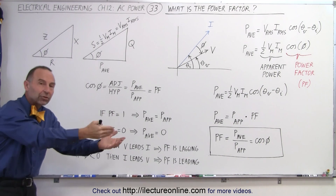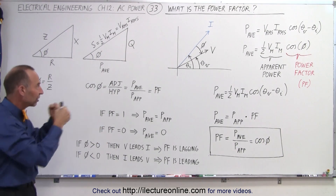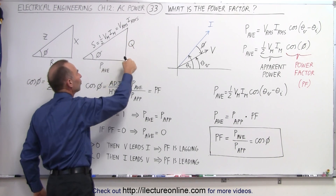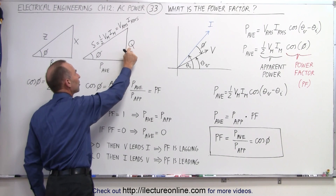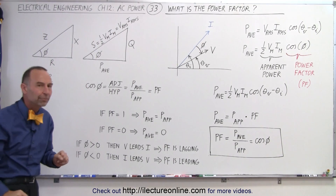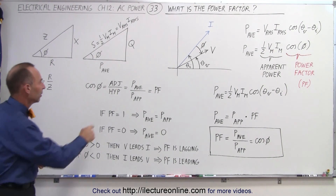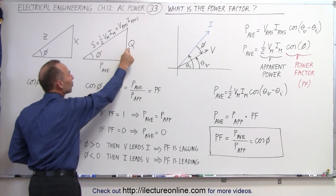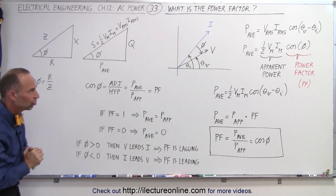The inductor or capacitor doesn't actually dissipate power — it temporarily takes the power and gives it back, repeatedly. So Q is the reactive power, and this other side is the real power consumed. We can then see the relationship between the reactive power, the real power, and the total apparent power. The apparent power is not the total real power consumed — it's the total power accounting for the phase angle, the reactive power, and the real power consumed by the resistor.